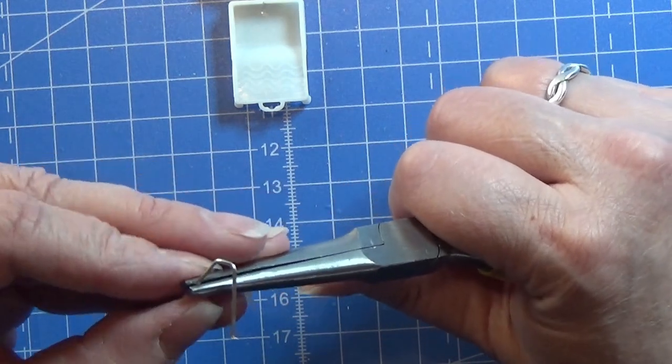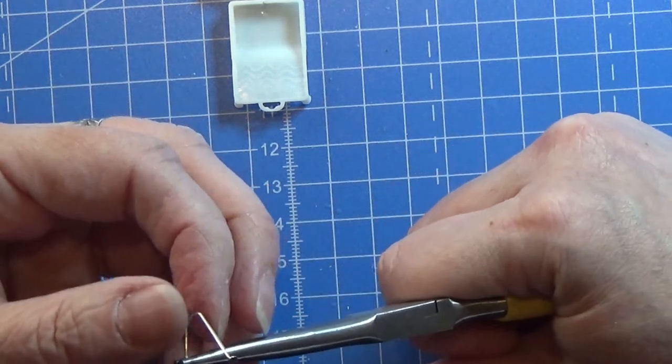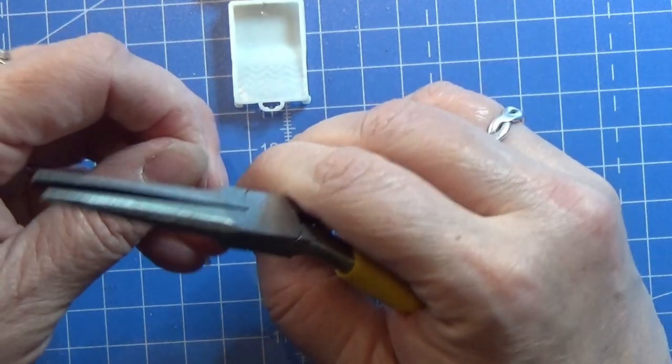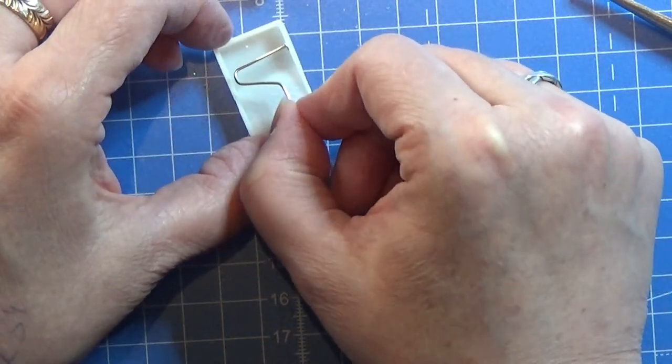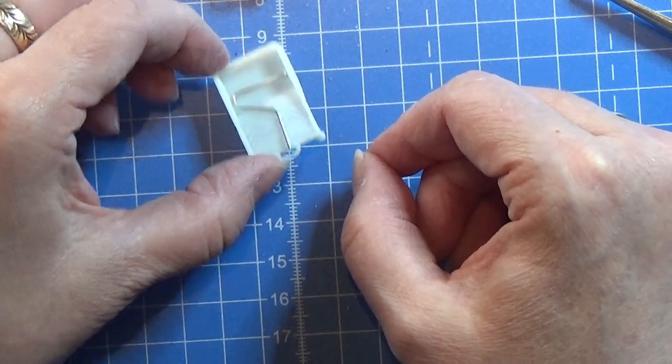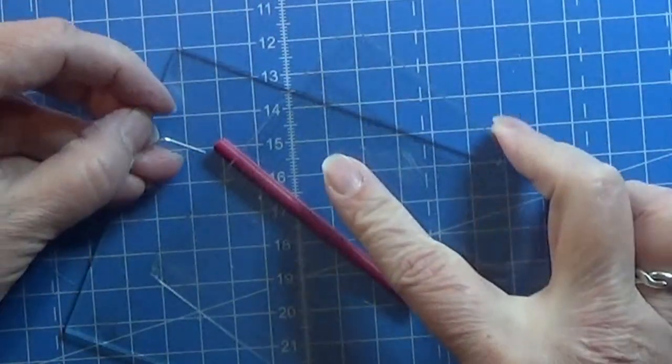You can use a paper clip—just unfold it and bend it like you see here—or some kind of other wire. Just make sure they are not too bendy so that they can keep the shape.